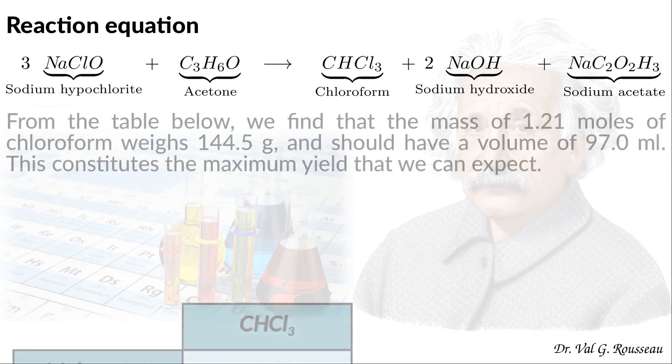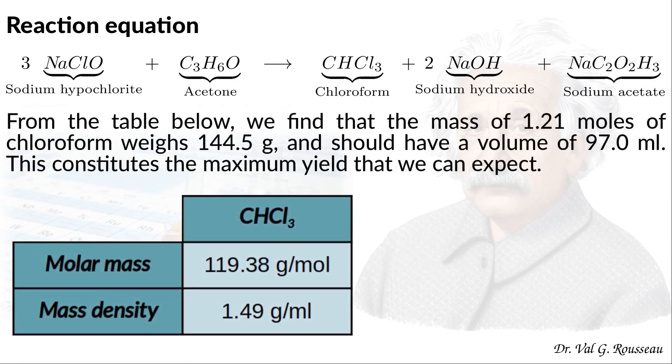Finally, from the molar mass and the mass density of the chloroform, we find that the expected 1.21 moles of chloroform weighs 145 grams and should have a volume of 97 mls. This constitutes the maximum yield that we can expect.